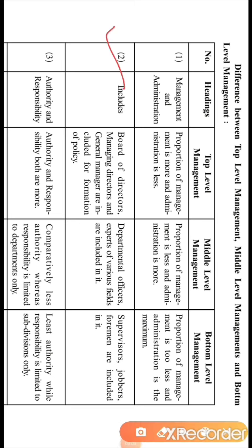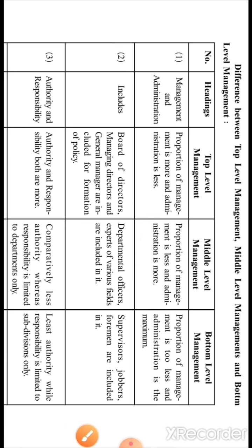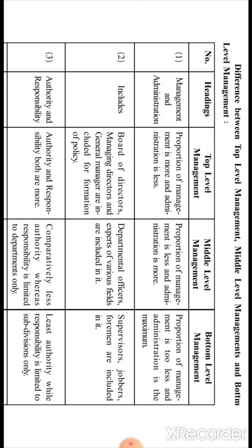Regarding who is included at each level: at the top level management, the board of directors, managing director, and general manager are included for formation of policy. At the middle level, different departmental officers and experts of various fields are included — such as production manager, sales manager, marketing manager, human resource manager, finance manager, and experts like engineers, chartered accountants, and company secretaries. At the bottom level, supervisors, jobbers, and foremen are included.